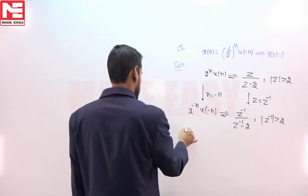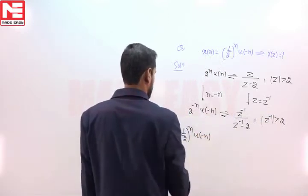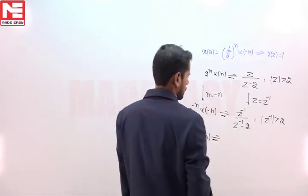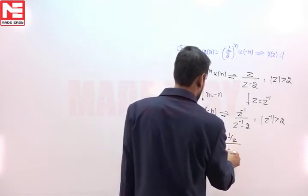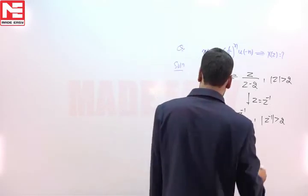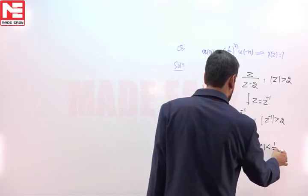We can write down LHS in this form: (1/2)^n * u(-n). For this term, Z transform is (1/Z)/((1/Z) - 2) with ROC |Z| < 1/2.